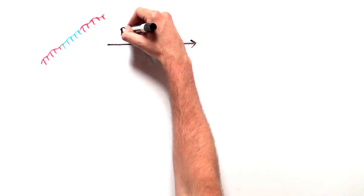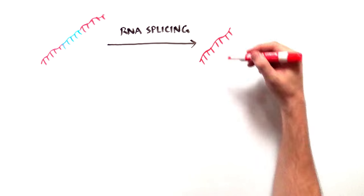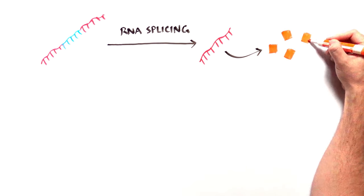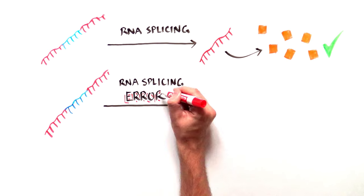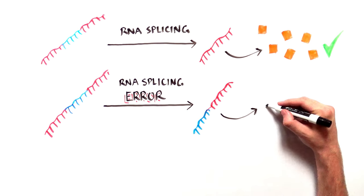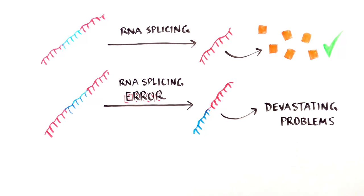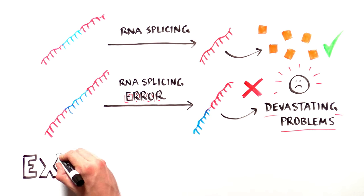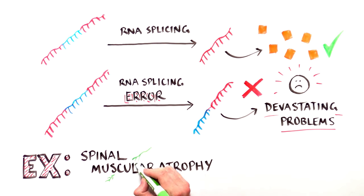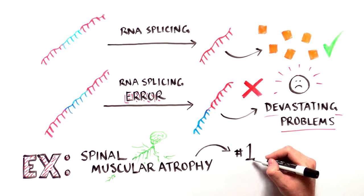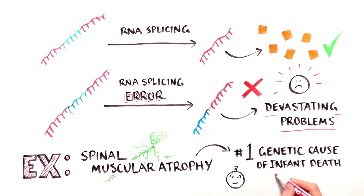While RNA editing is critical for generating the hundreds of thousands of proteins that keep us alive, splicing errors can lead to devastating health problems. One example is an often fatal disease called spinal muscular atrophy, or SMA. It's the number one genetic cause of infant death.